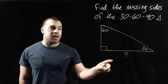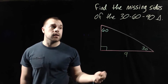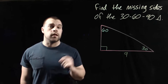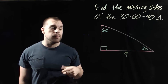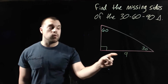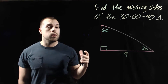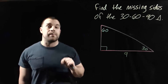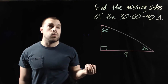In our last example, we're given the length of the long leg as 9, and we're going to find the length of the short leg first before finding the hypotenuse. Normally if we had the short leg and wanted to find the long leg, we'd multiply by the square root of 3, but this time we're going in the opposite direction, so we're going to divide by the square root of 3.